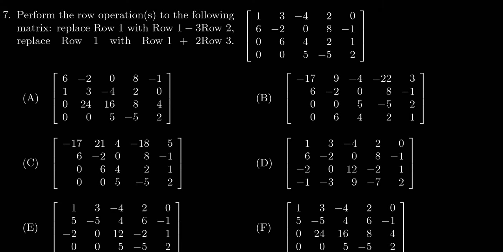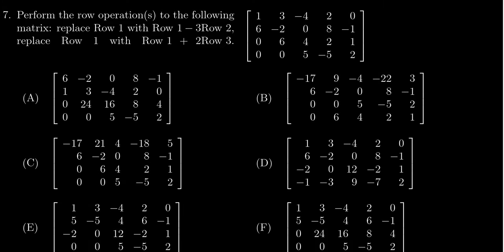We are first asked to replace row 1 with row 1 minus 3 times row 2, and then subsequently we're asked to replace row 1 with row 1 plus 2 row 3. So we have to do this in basically two steps.